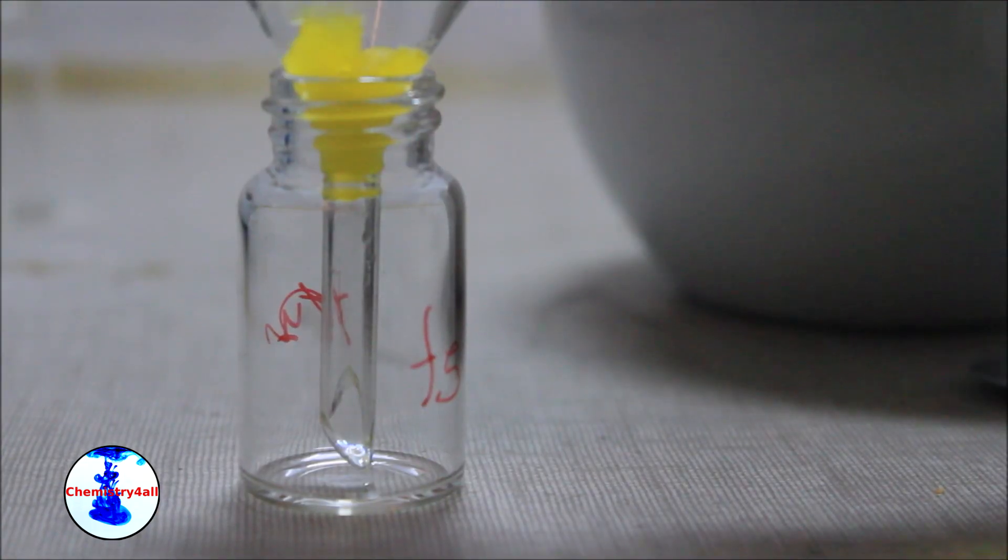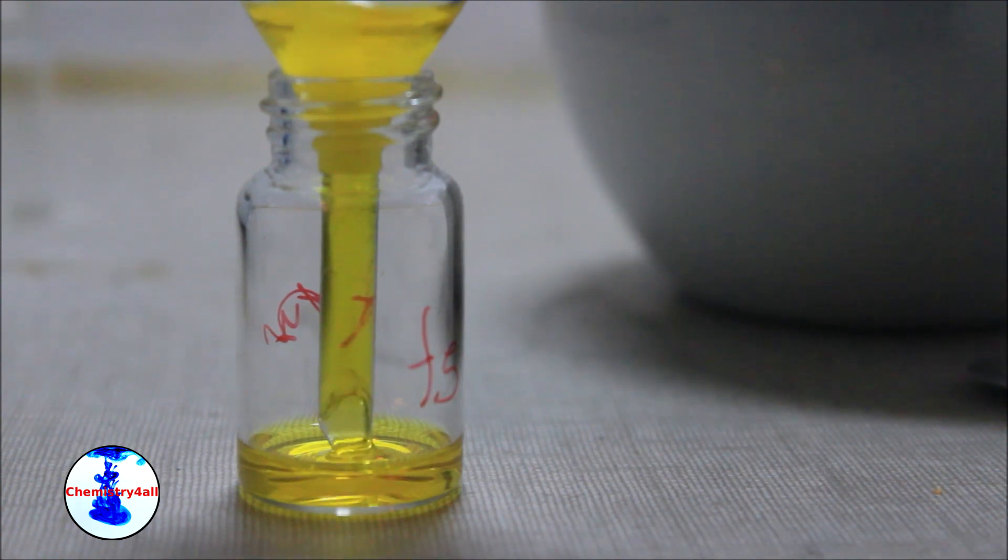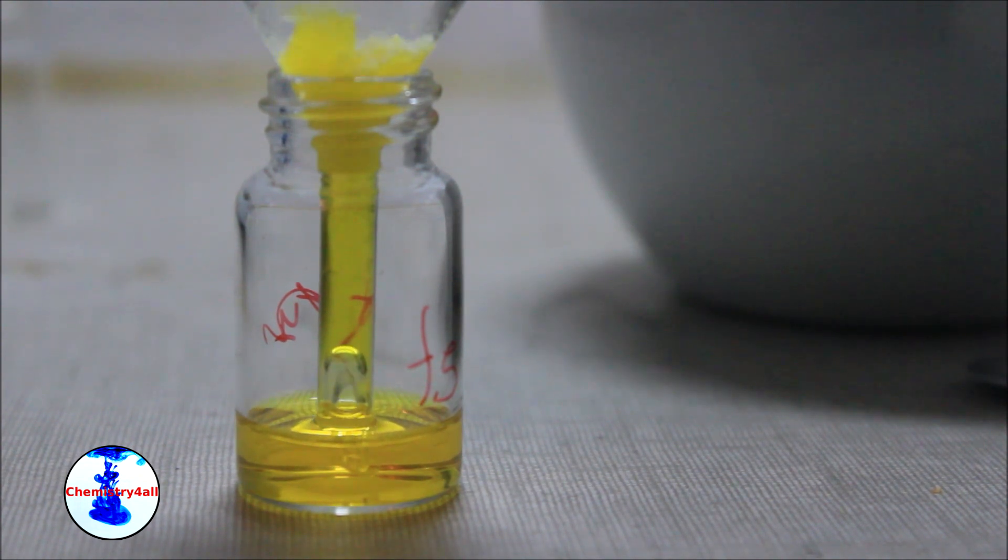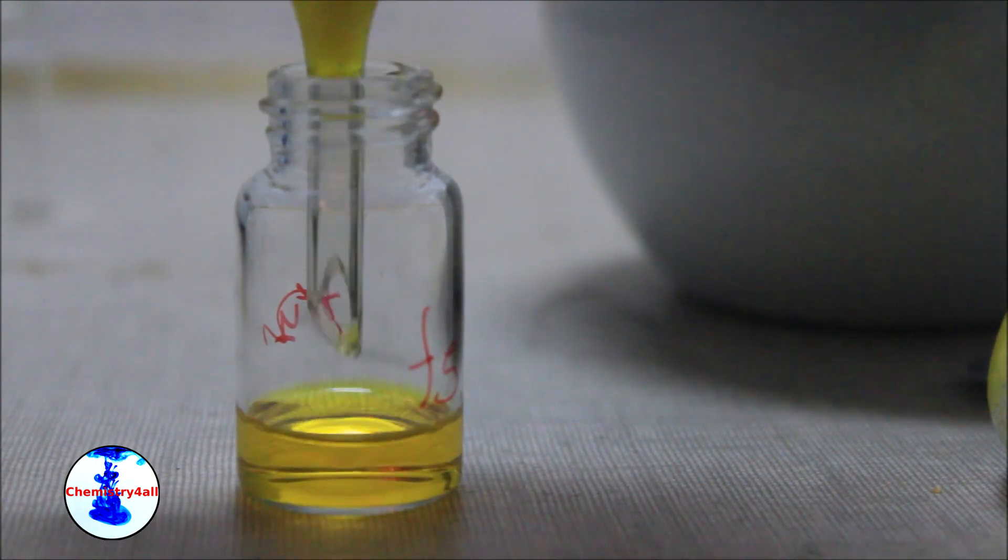The solution is then filtered and collected in a clean vial. And finally we should have obtained a relatively diluted solution of trans-beta-carotene.